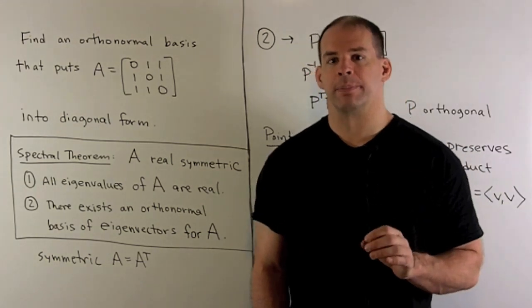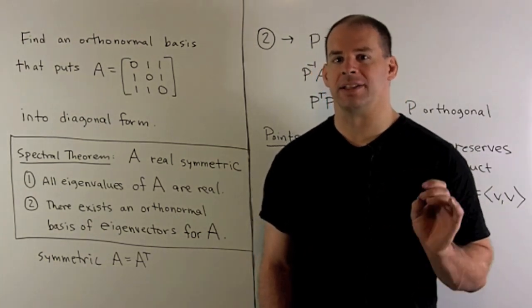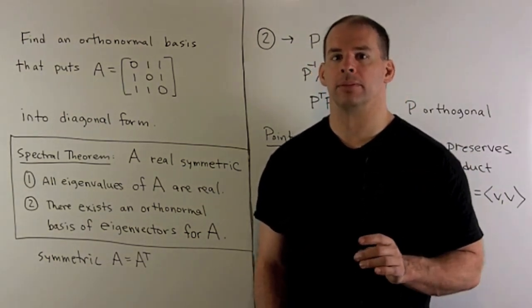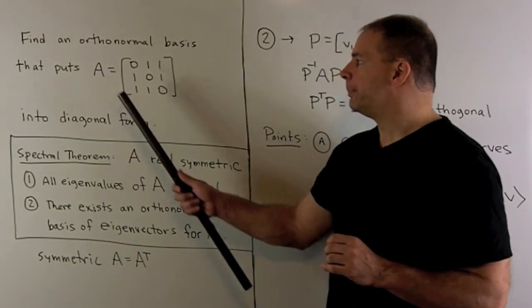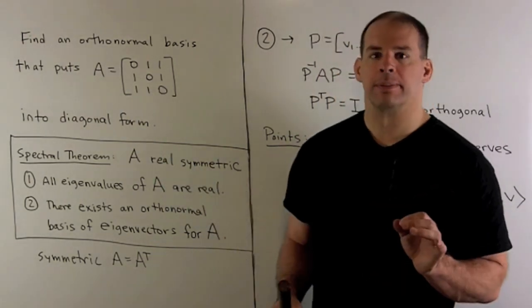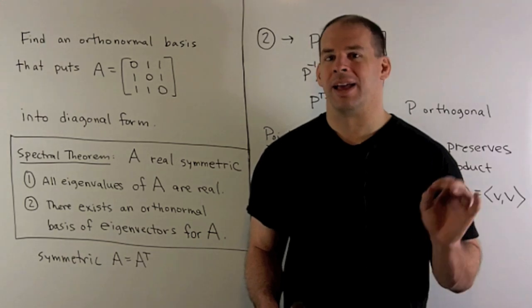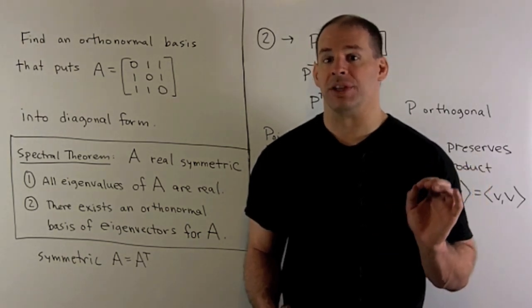Find an orthonormal basis that puts the following matrix A into diagonal form. A is going to be the 3 by 3 matrix where every entry is equal to 1, except along the diagonal where they're equal to 0.